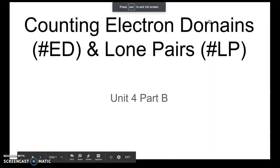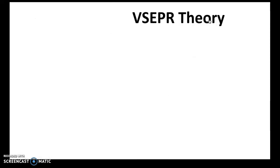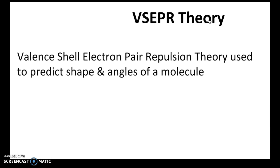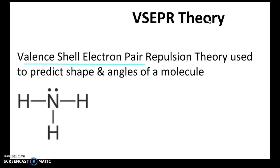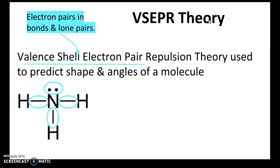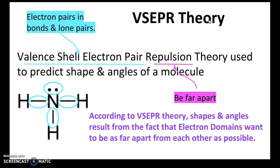Hi, welcome to the video on counting electron domains and lone pairs. In this unit, unit 4B, we're learning about the VSEPR theory. VSEPR stands for valence shell electron pair repulsion theory and it's used to predict shapes and angles of a molecule. The valence shell describes the electron pairs in both bonds and lone pairs around the central atom. Repulsion describes the fact that these electron pairs want to be as far apart as possible, and the shapes that result are the shapes of the molecules.